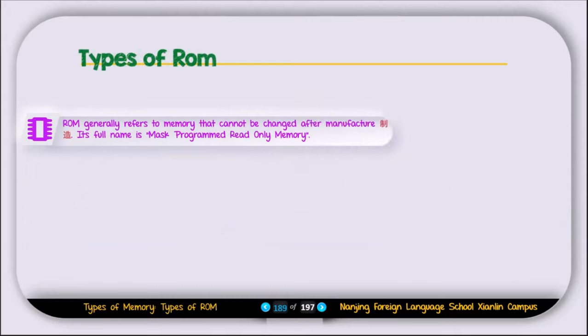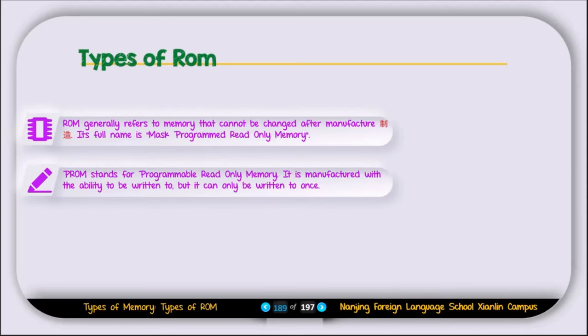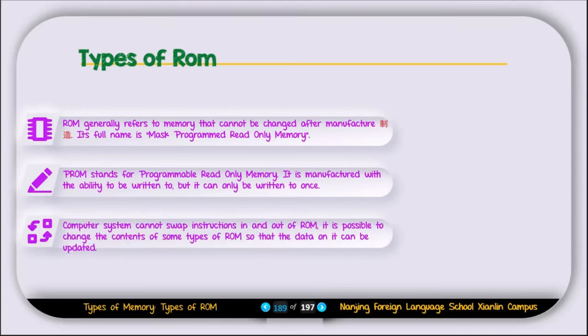Now let's discuss the types of ROM. ROMs generally refer to memory that cannot be changed after manufacture. Its full name is mask-programmed read-only memory. PROM stands for programmable read-only memory. It is manufactured with the ability to be written to, but it can only be written to once. Computer systems cannot swap instructions in and out of ROM. It is possible to change the content of some types of ROM so that the data can be updated.